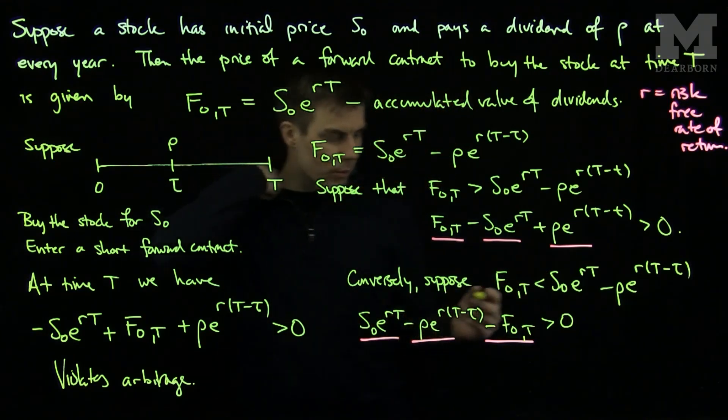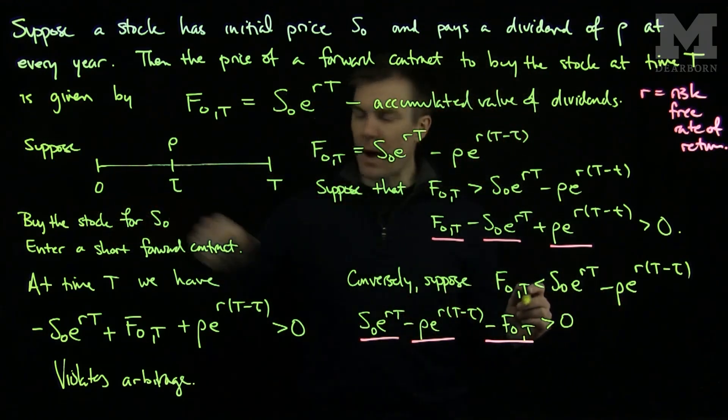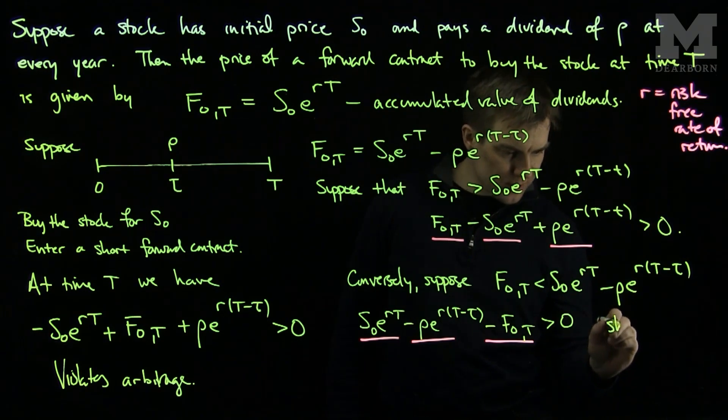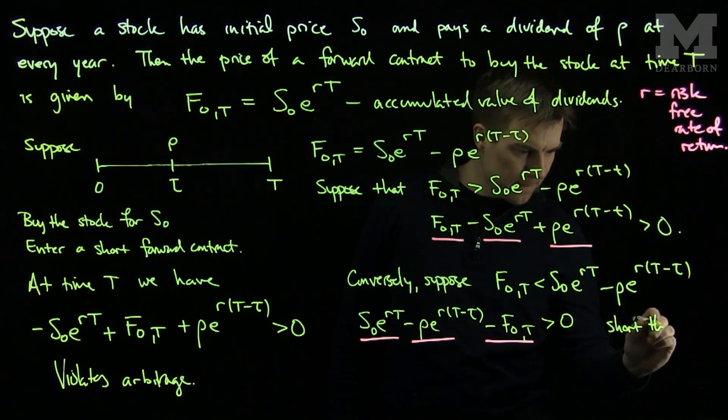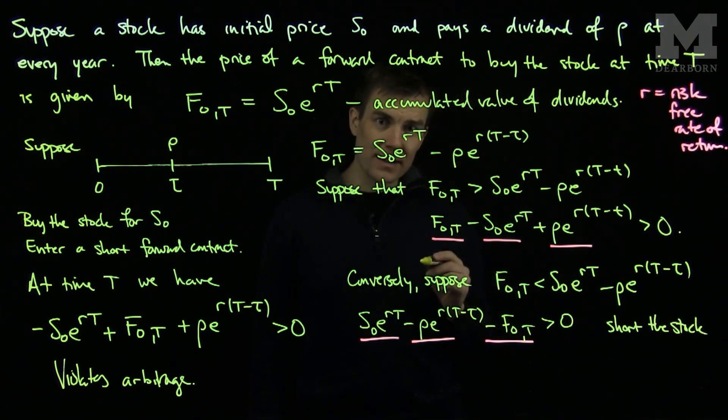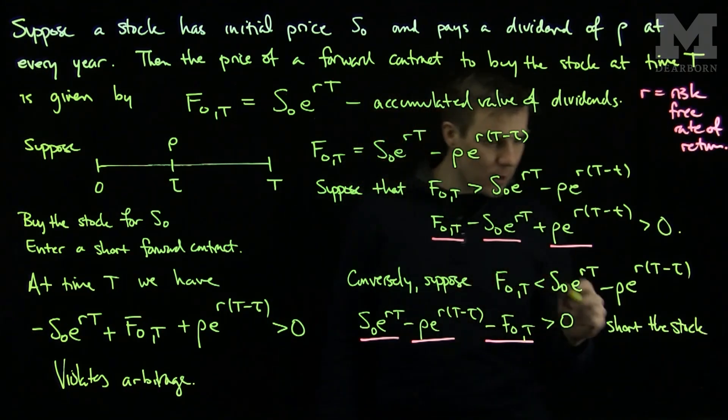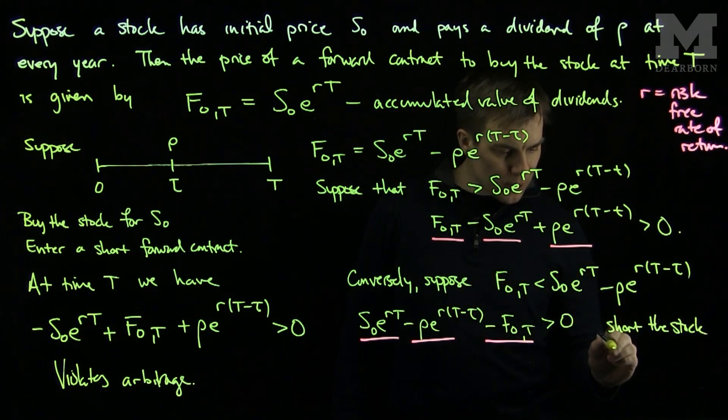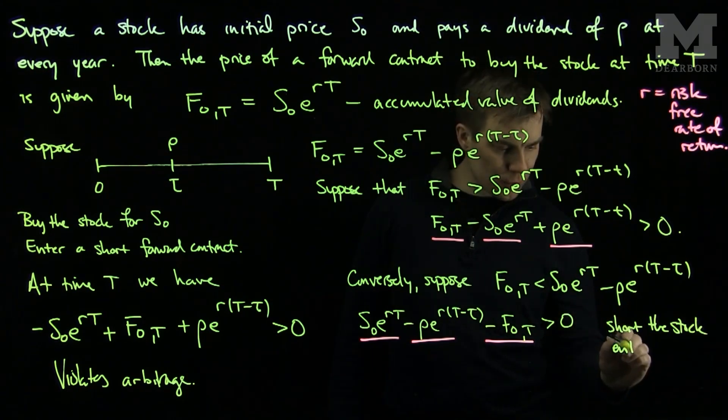In this situation, what we will do, is instead of buying the stock, we will short the stock. Meaning, we will borrow the stock and sell the stock immediately. Then, we will enter a long forward contract as opposed to a short forward contract.